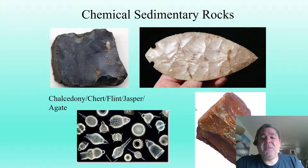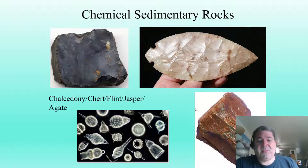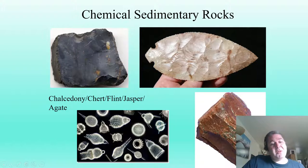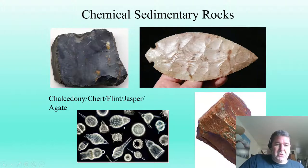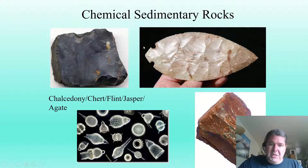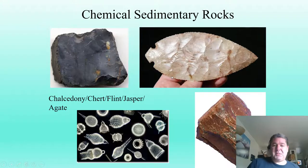Chert, chalcedony, flint, jasper, and agate are all the same thing — just different color varieties of microcrystalline quartz. We believe these come from single-cell organisms called radiolaria, which unlike foraminifera make their shells — or tests — out of silica (SiO2). Those get squished together to form chert. Chert has long been used to create stone tools and implements.